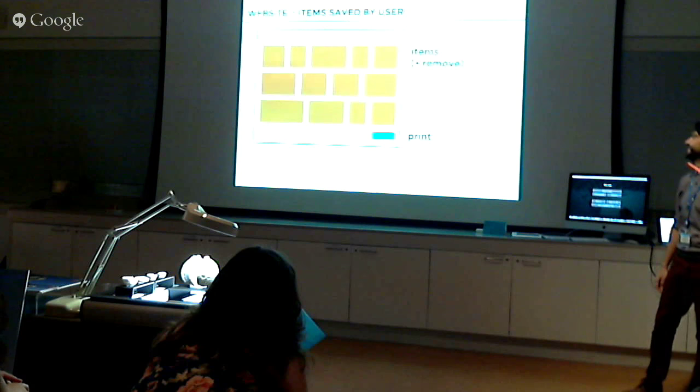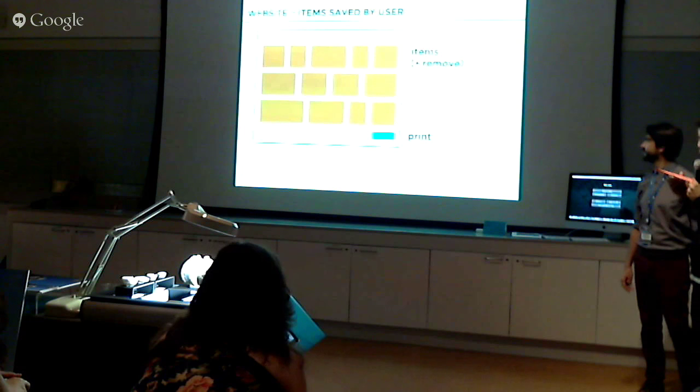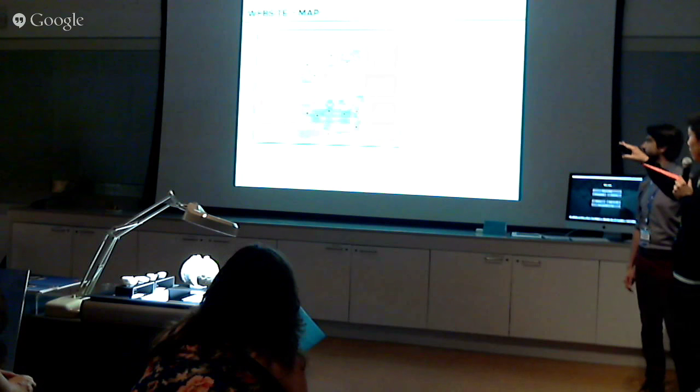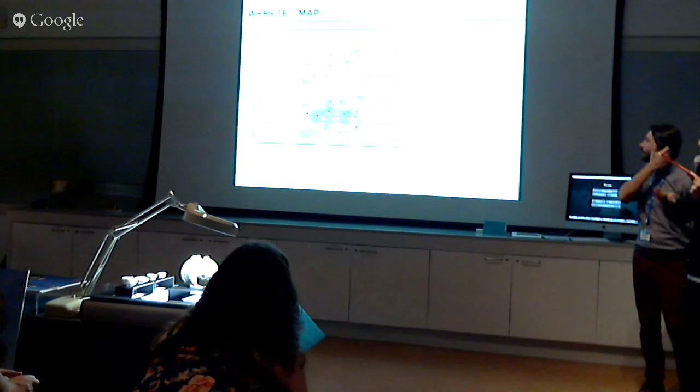This is the last page of our project — all the items you have chosen. By clicking each item, you can also remove things. And then finally, there is a map, and the path shown is the shortest path visiting every artwork you have chosen. You print that and bring it to the museum and just walk around, without getting lost.